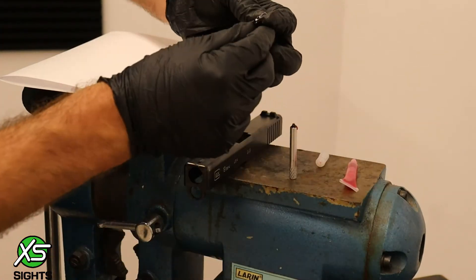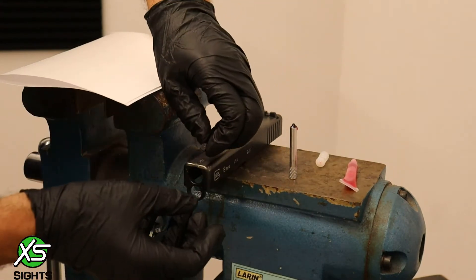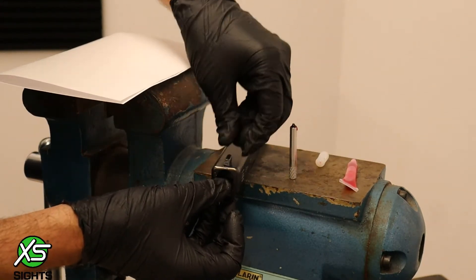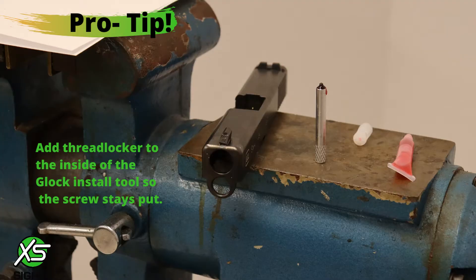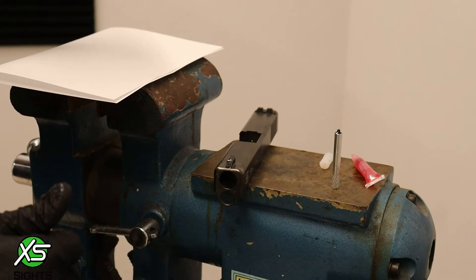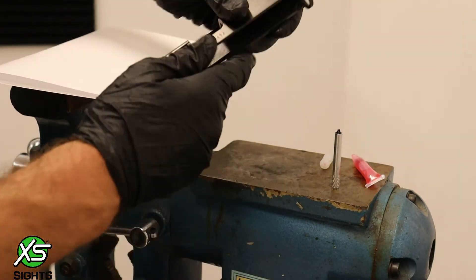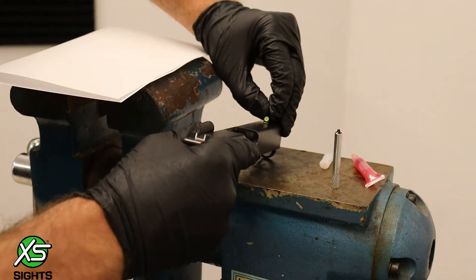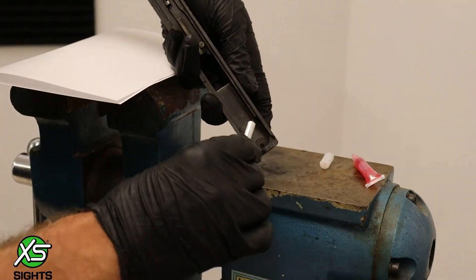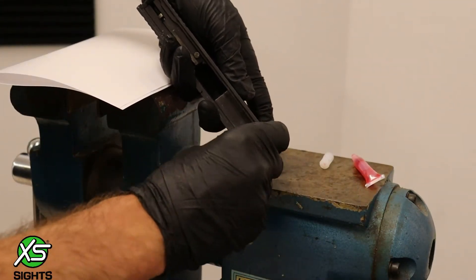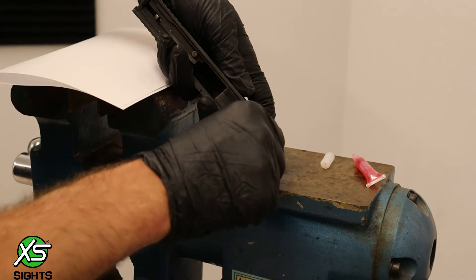Apply Red Thread Locker to the bottom of the sight and screw. Remember, don't over tighten the screw.